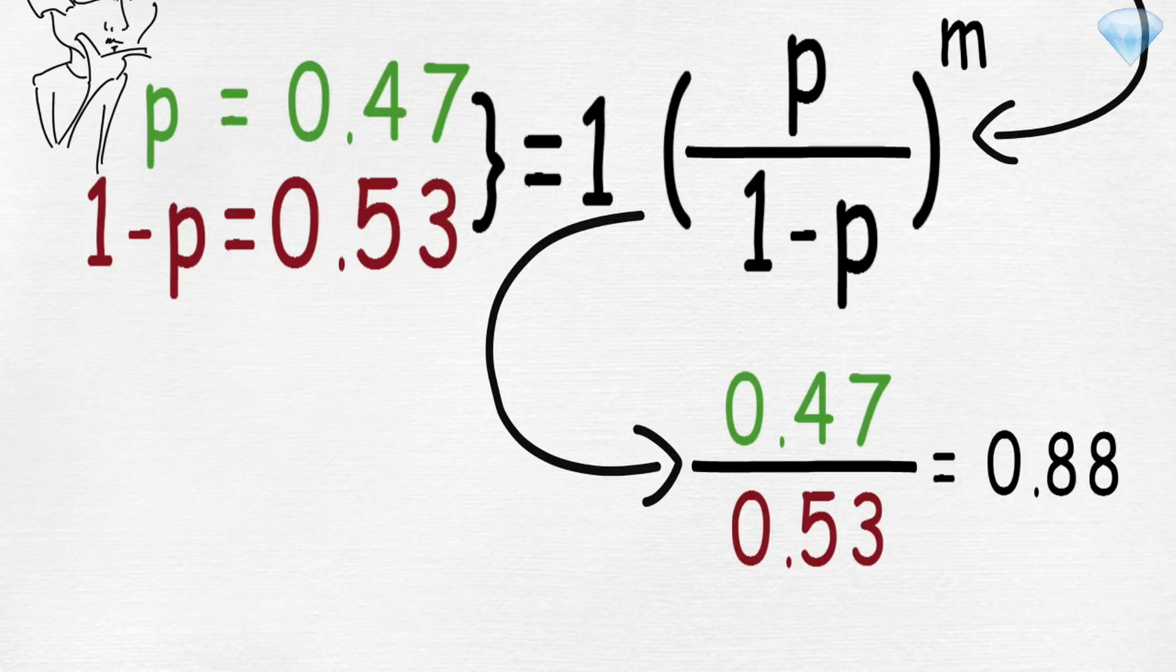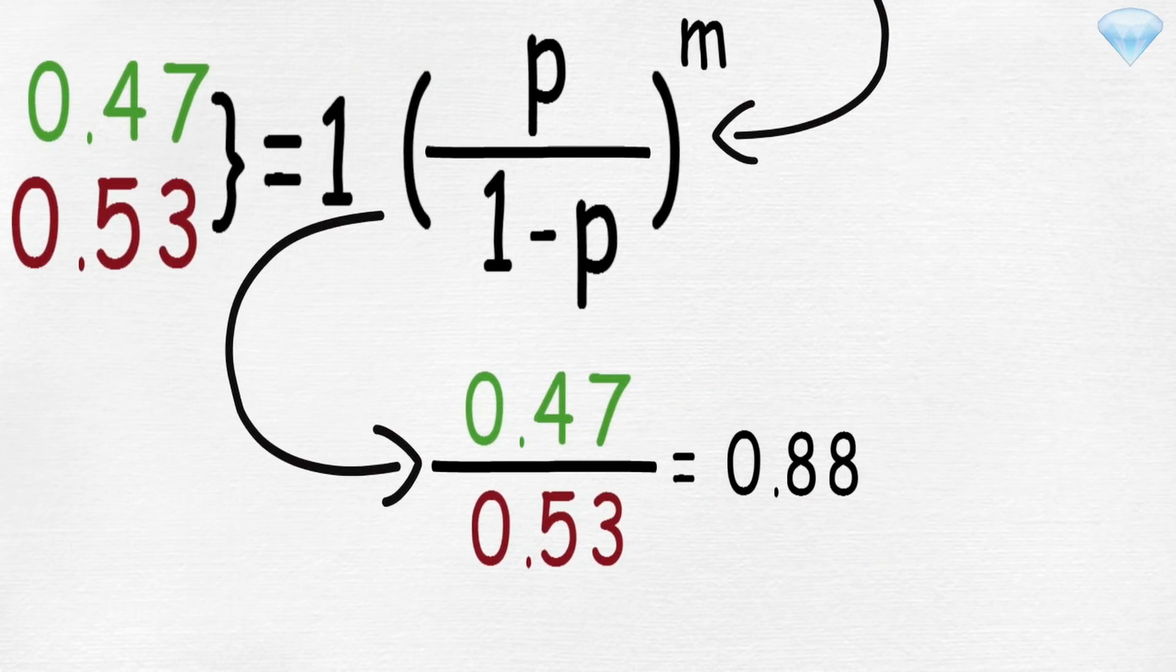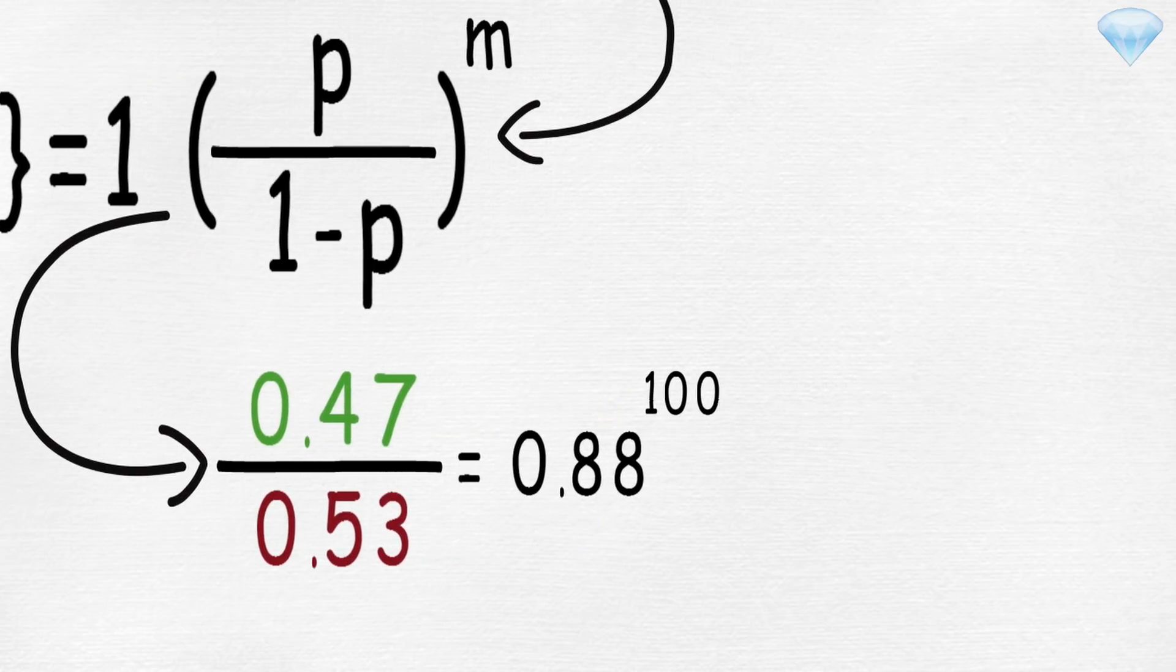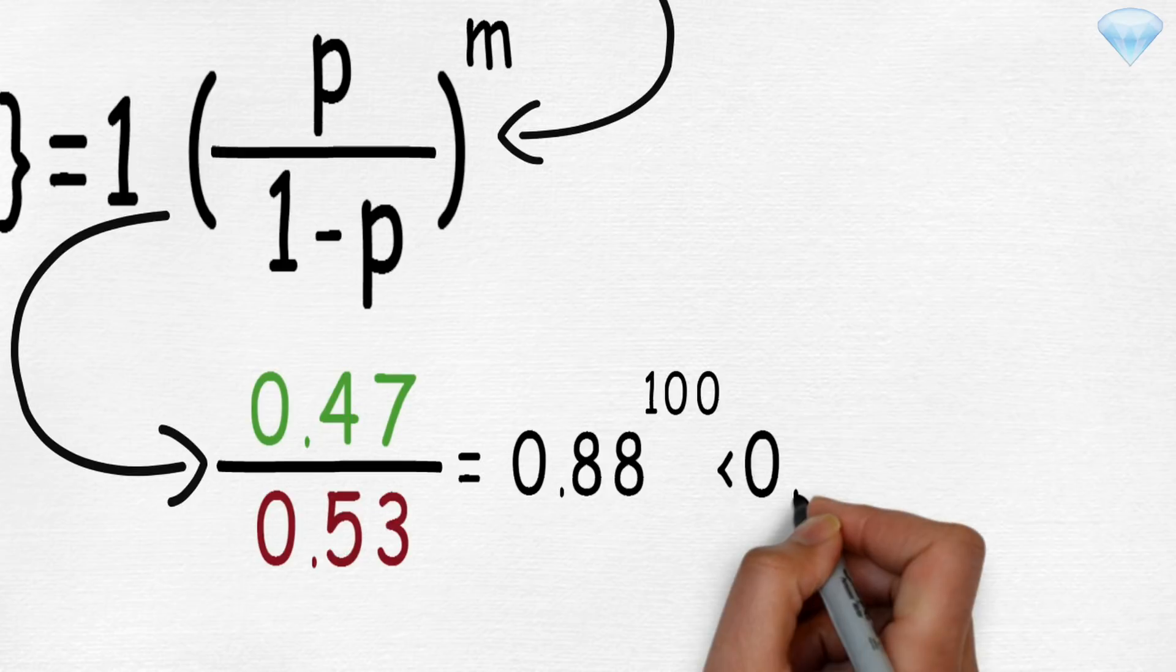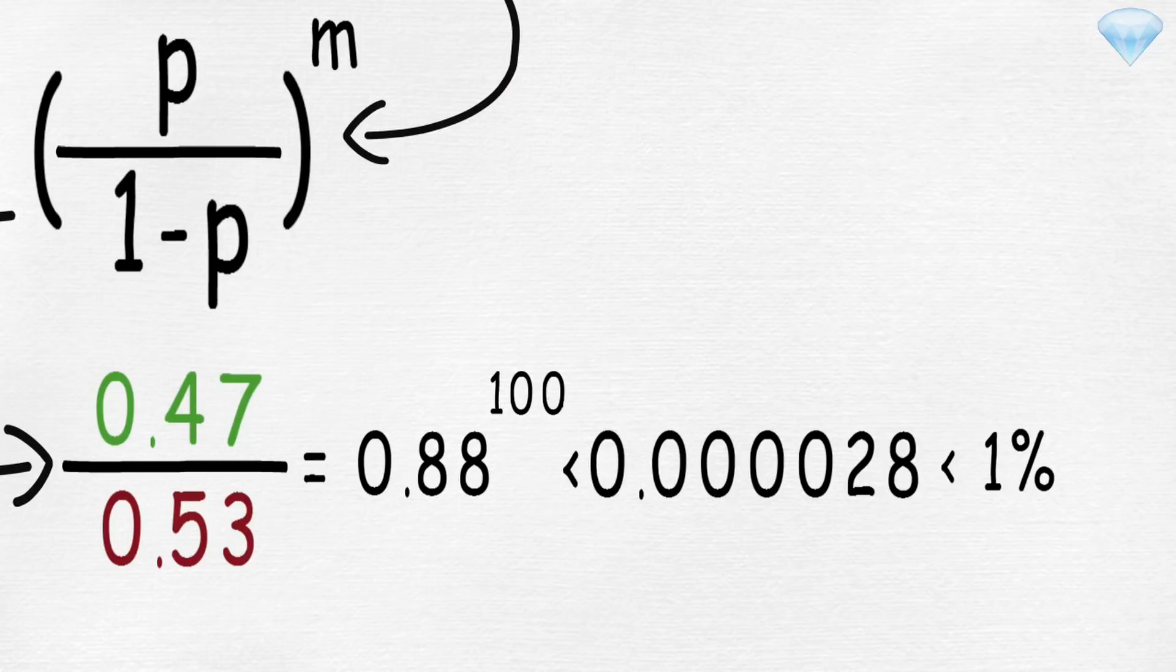And for any n, where n is the amount of dollars we started with. If m equals 100 dollars, where m is the amount of dollars we want to win, then probability of win is less than or equal to 0.88 to the power 100, which is less than or equal to 0.000028, which is much less than 1. So there is no chance of winning.